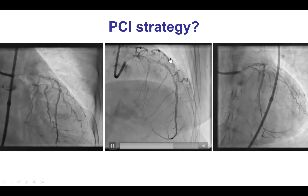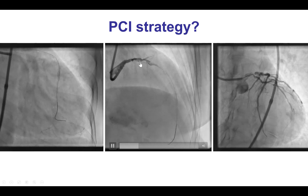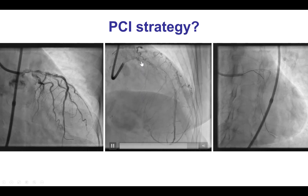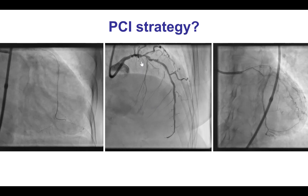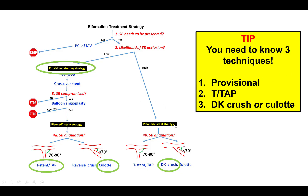What is the best PCI strategy? This is a Medina 1-1-1 bifurcation, and therefore there is significant risk of losing the side branch, which is the circumflex in this case. An upfront two-stent strategy is needed. The circumflex is significant, the likelihood of occlusion is high given the significant ostial disease, and therefore a planned two-stent strategy is needed. The angulation here is less than 70 degrees, so the DK crush or culotte can be used.